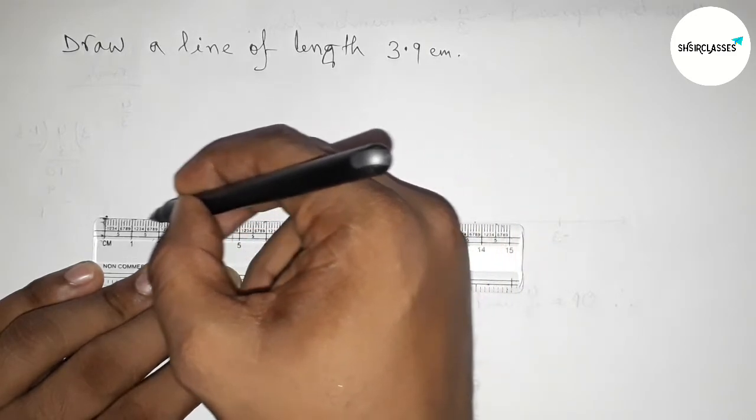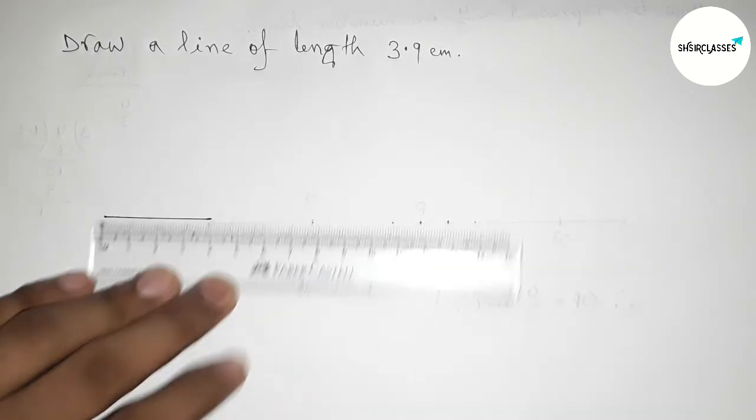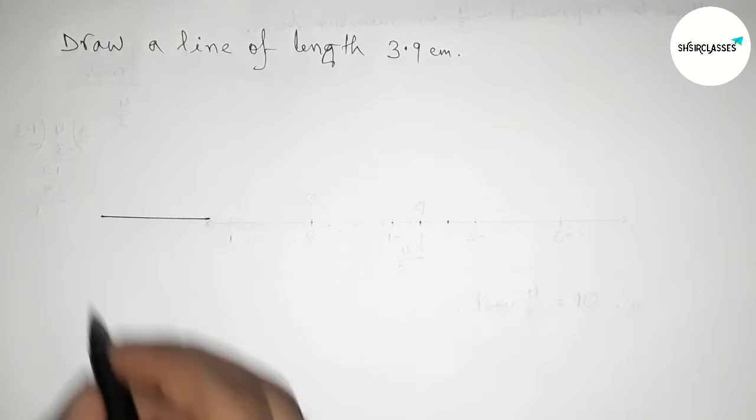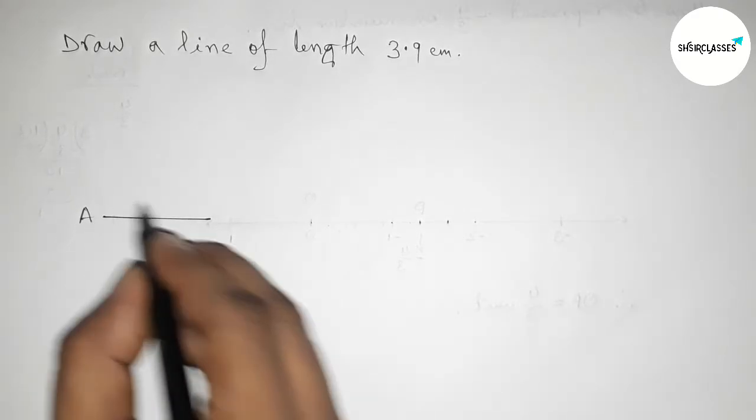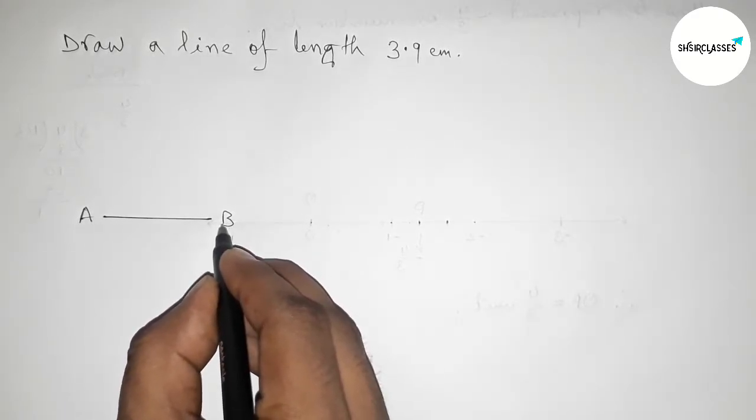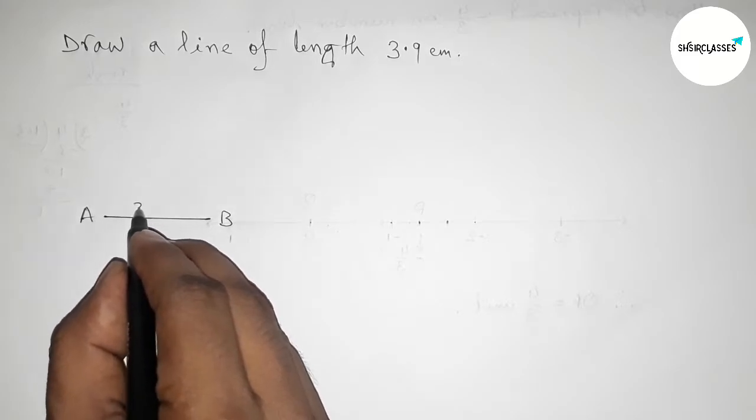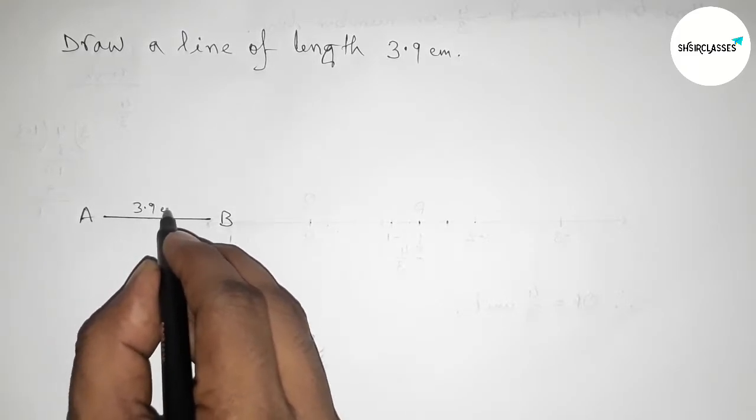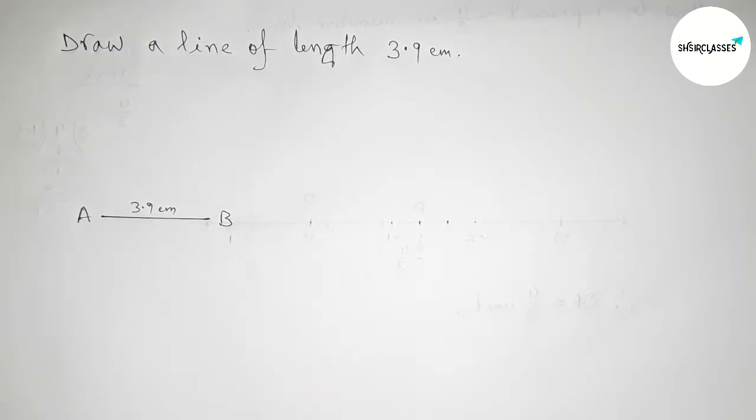Join this line, taking here point A and here B. So AB is a line of length 3.9 centimeter.